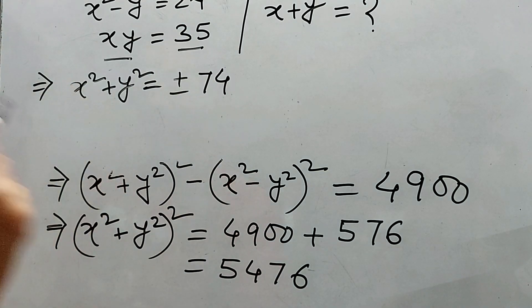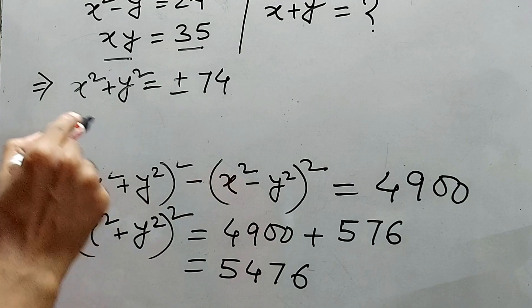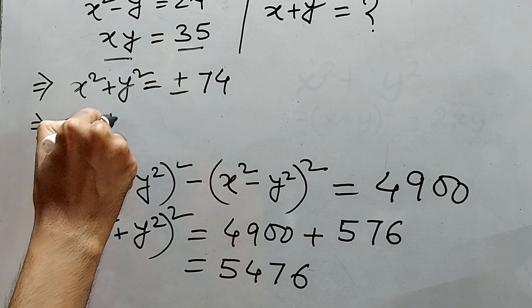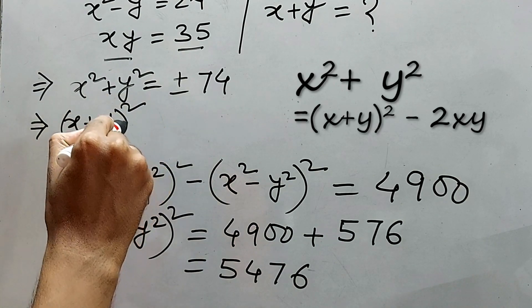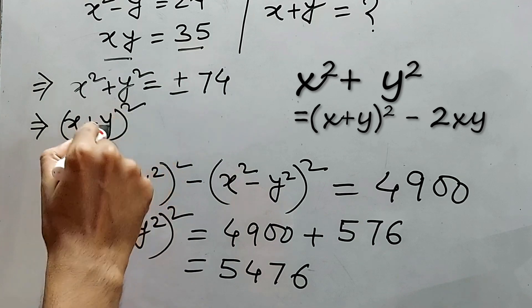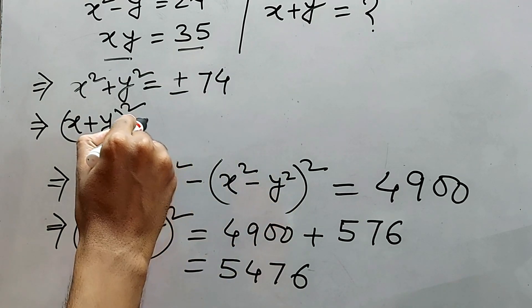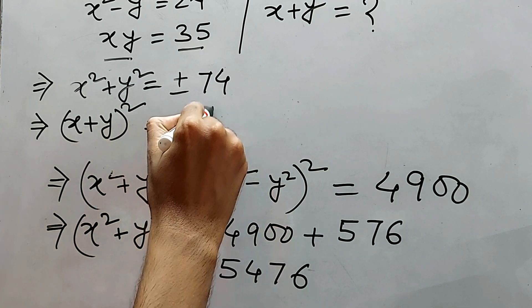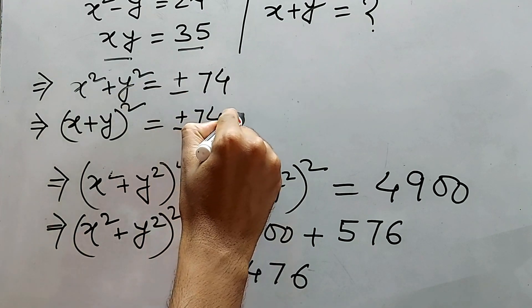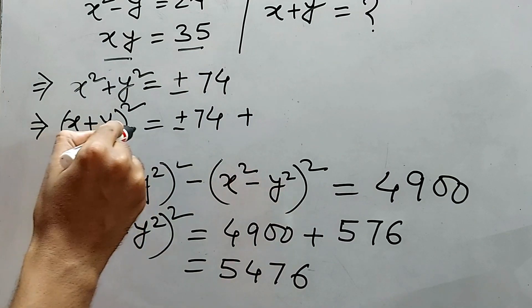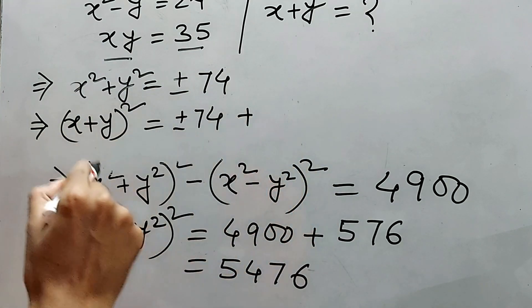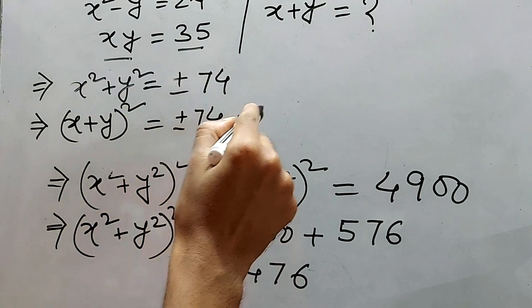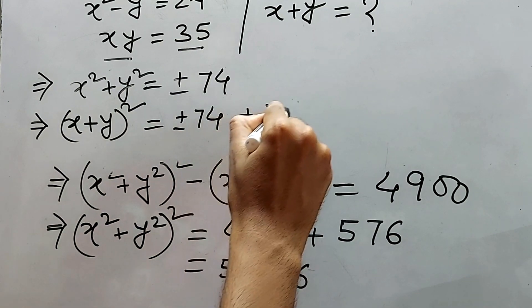A squared plus b squared is equal to a plus b whole square minus 2ab. Right? So directly we can write x plus y whole square minus 2ab minus 2xy. We are taking to the other side and it will be plus minus 74 plus because the thing was minus on this side and it will be plus on the other side plus 2ab. That means 2xy. That is 2xy. xy is 35. So 2xy will be 70. So plus 70.